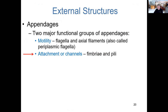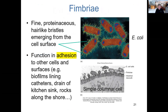Another important appendage found in some bacteria has no role in motility but helps the cell anchor to a substrate or permits materials to move between cells. These are fimbriae and pili. Let's talk about fimbriae first.